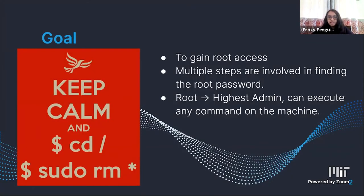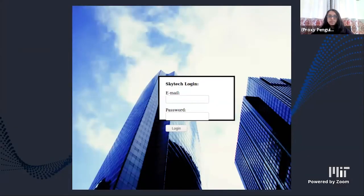The purpose of compromising this system is to gain root access on the SkyTech machine. There are multiple steps involved in finding the root password, which we'll explain in this presentation. Once we get the root password, we can log in as root and have access to every command on the machine — basically access to anything on the device.